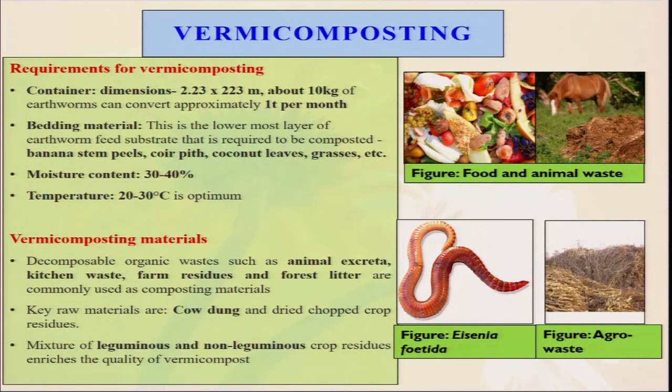In case of leguminous crop residue, nitrogen content will be high and C:N ratio will be low. While in case of wheat or rice straw, nitrogen content is low, carbon content is high, and C:N ratio will be very high. If we properly mix these along with some cow dung — layer by layer giving different types of crop residue — maybe cereal residue, legume residue, and vegetable waste — by this process we can enhance the quality of our vermicompost.